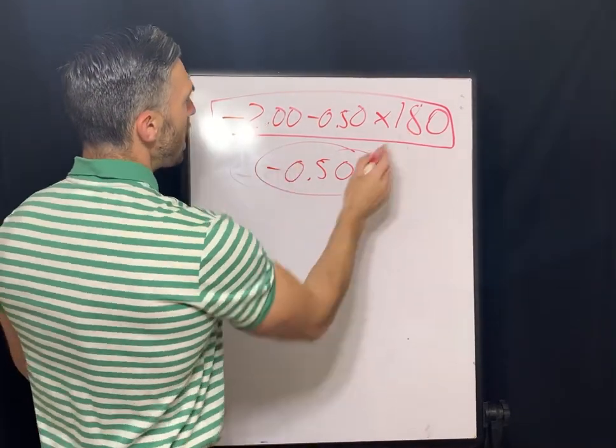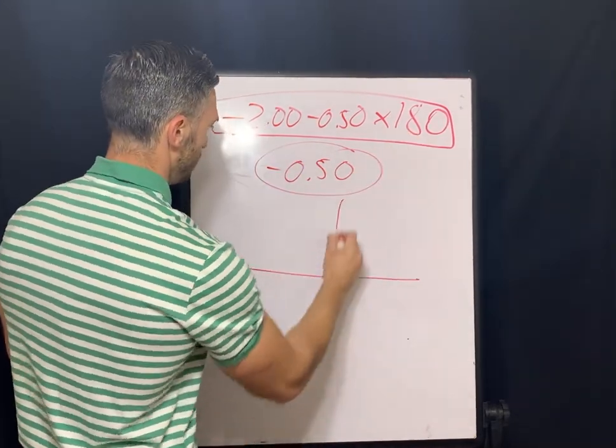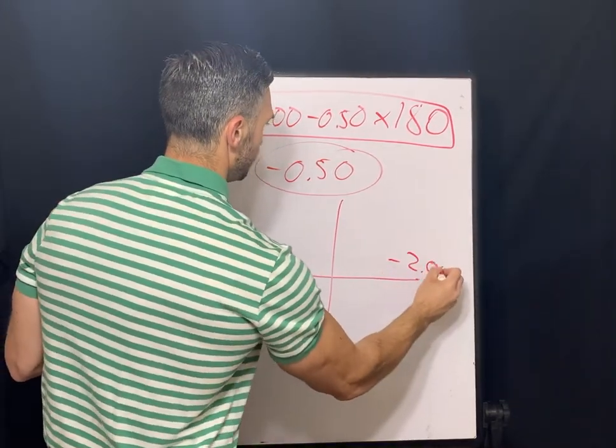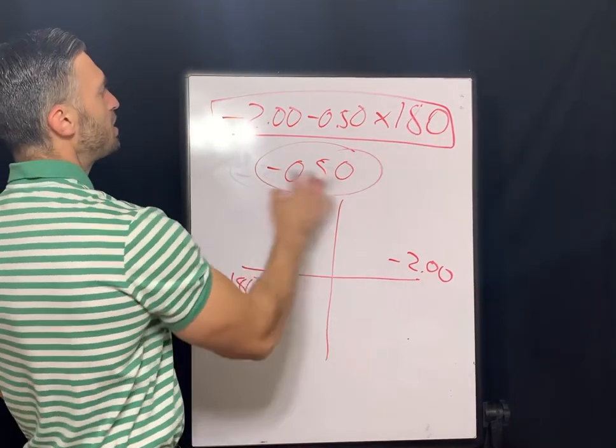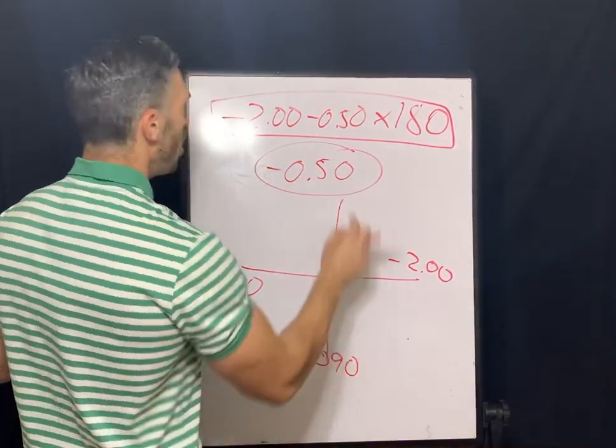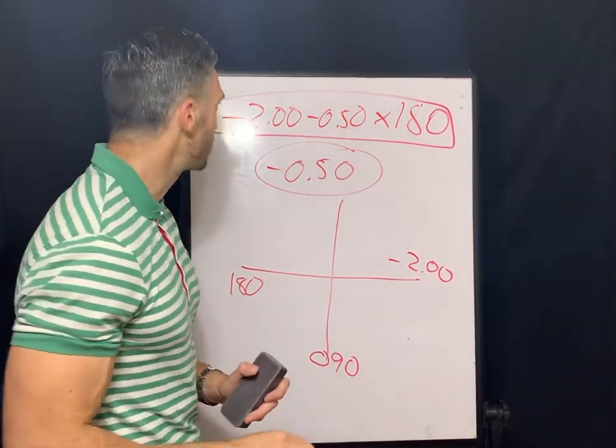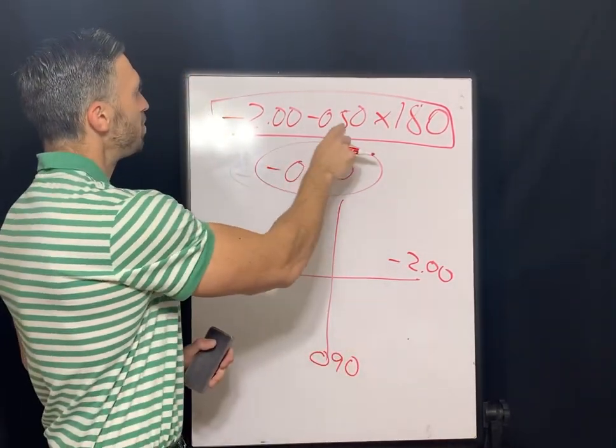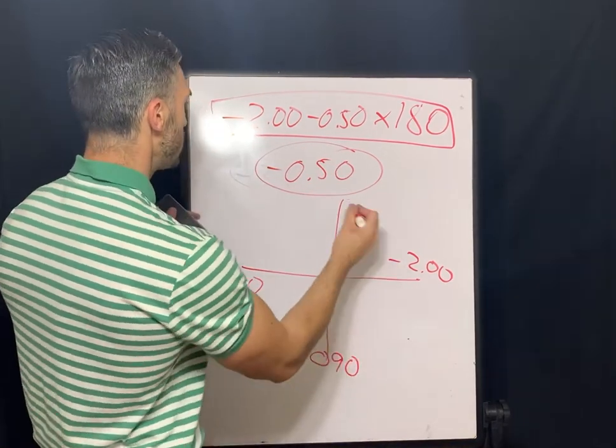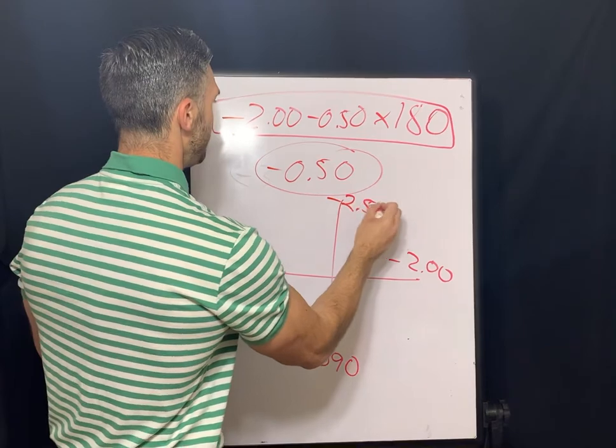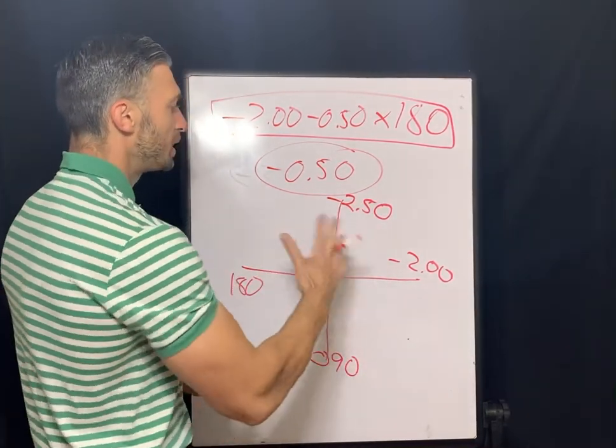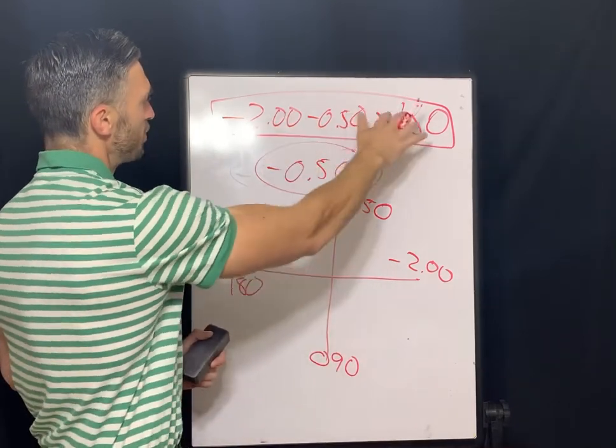So let's put the original prescription on the cross here. So we have negative two axis 180. Remember 180s are horizontal. So we'll say negative two, 90 degrees away from this. So on our 90 degree meridian, all of that cylinder power is present, 90 degrees away. So negative two plus the minus a half. So our power along the 90 degree meridian is minus 2.50.